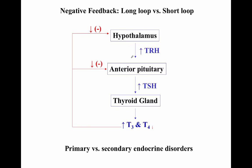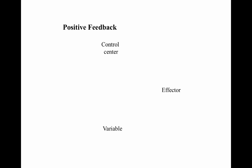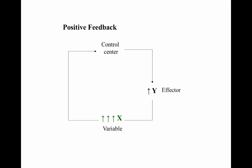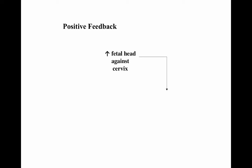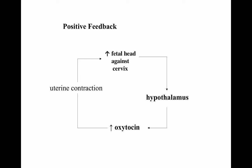A positive feedback loop enhances the original stimulus. For example, in uterine contractions, the fetal head pushing against the cervix is sensed by stretch receptors and detected by the hypothalamus. The hypothalamus then releases oxytocin from the posterior pituitary into the bloodstream, which inspires more uterine contraction — continuing until the baby is born, at which point the system resets and contractions end.